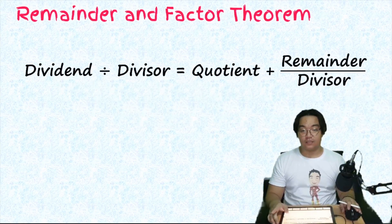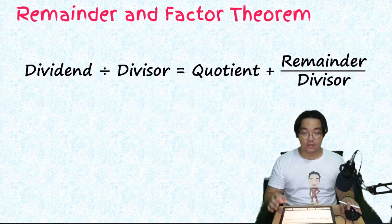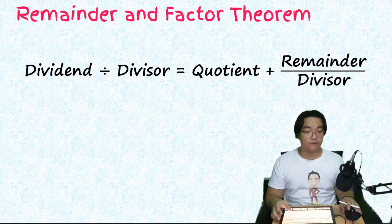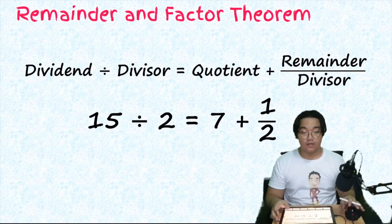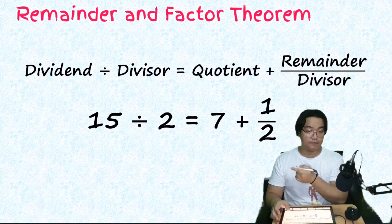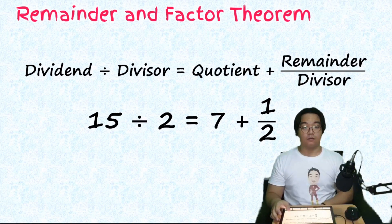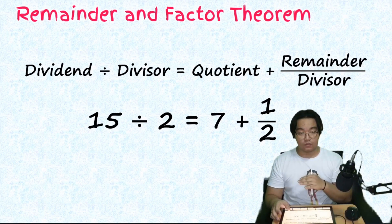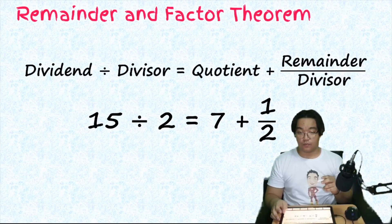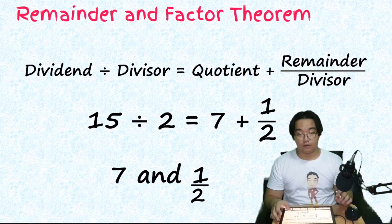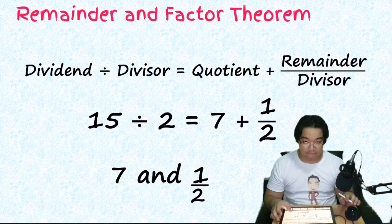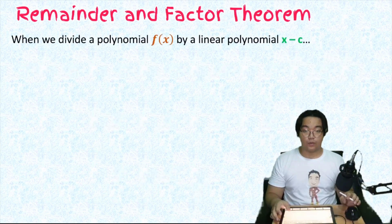Remember that in a division process we have: the dividend divided by the divisor is equal to the quotient plus the remainder over the divisor. In example, 15 divided by 2 gives us 7 remainder 1, and the remainder has to be divided by the divisor 2 again and then added to the quotient — that's why the result would be 7 and one half.